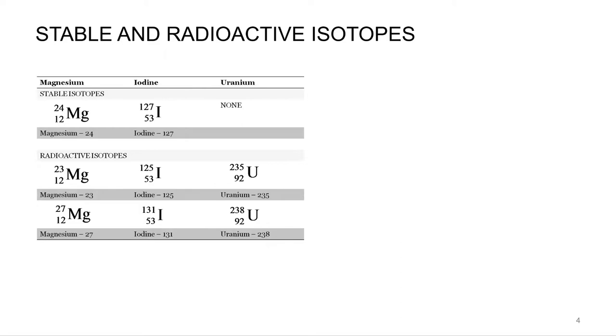Most elements also have stable isotopes. So a stable isotope would be an isotope that's not going to break down, that will never undergo a nuclear reaction.